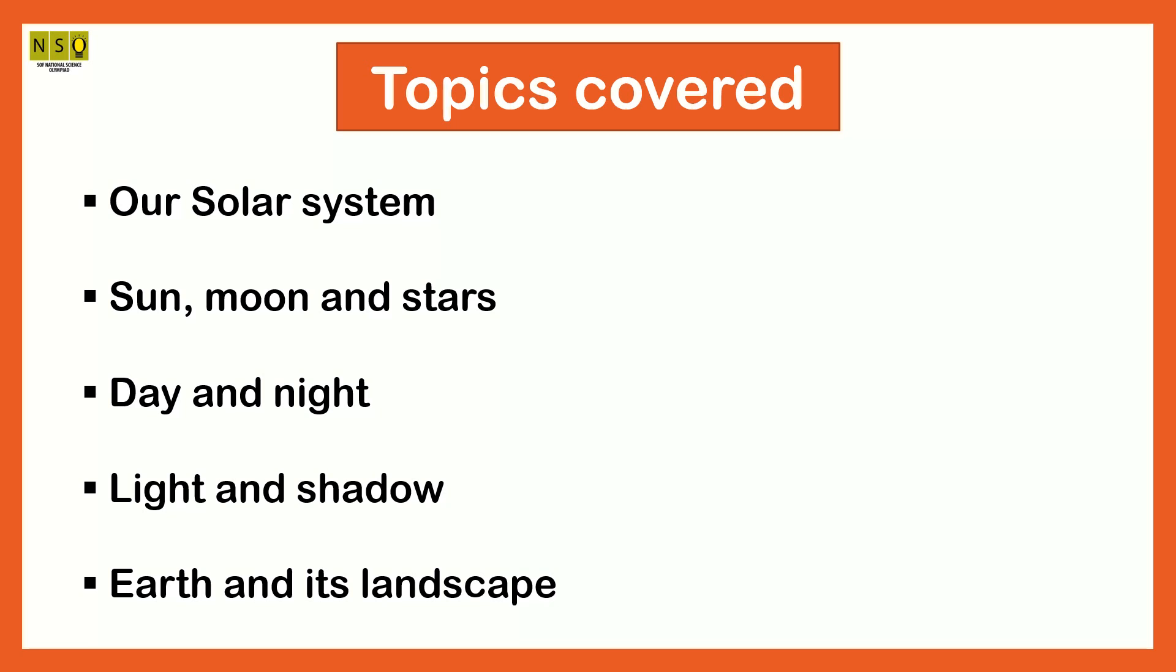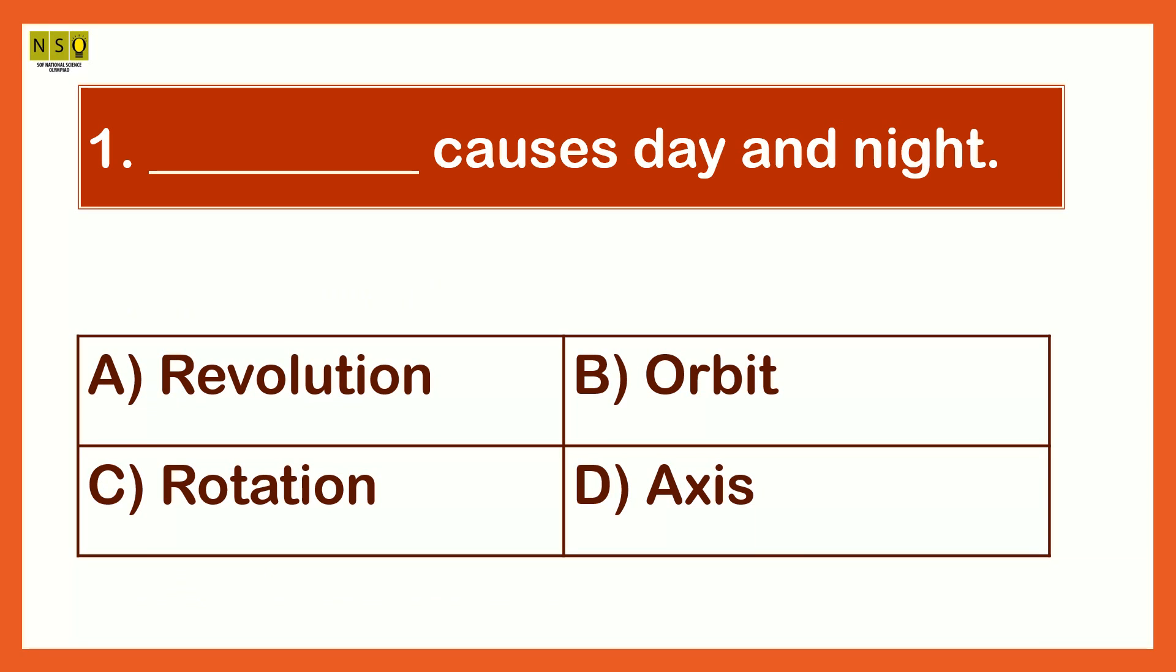Come, let us look at a few questions on these topics. What causes day and night? The options are Revolution, Orbit, Rotation, Axis. The answer is Rotation. Rotation causes day and night.